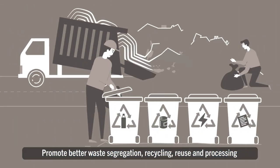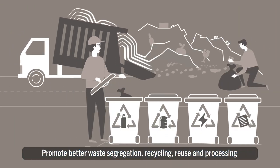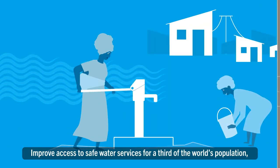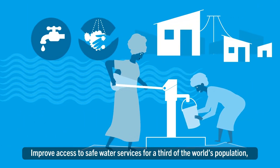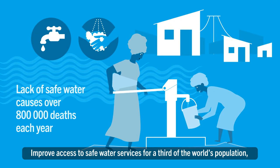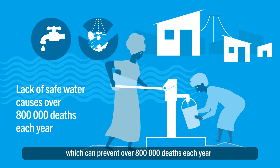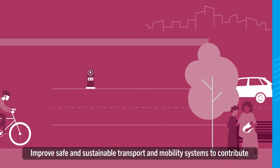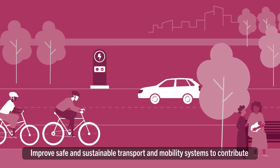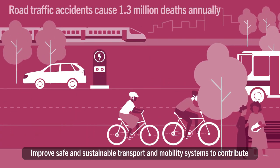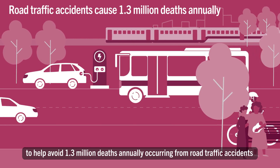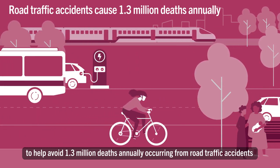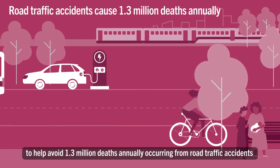The guidance covers how to promote better waste segregation, recycling, reuse and processing; improve access to safe water services for a third of the world's population, which can prevent over 800,000 deaths each year; and improve safe and sustainable transport and mobility systems to help avoid 1.3 million deaths annually occurring from road traffic accidents.